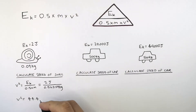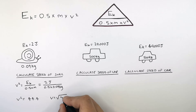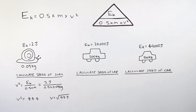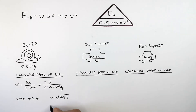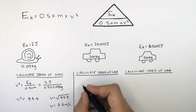So V squared isn't your answer. You need to square root 44.4 and that will give you V. So V equals the square root of 44.4, which gives you a speed for this snail of 6.6 meters per second, which is clearly unrealistic.